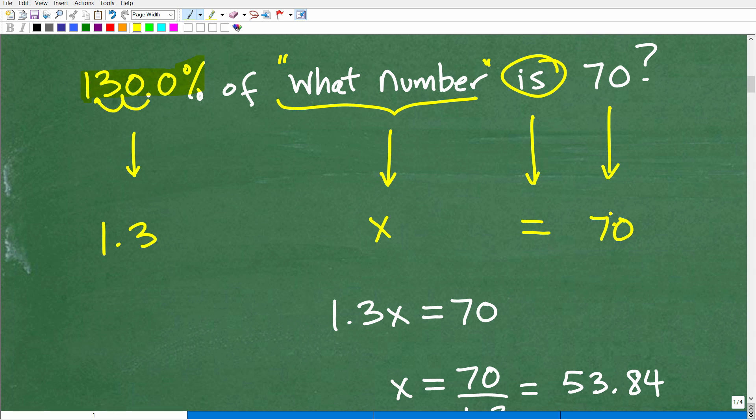So how do we find a percent of a number again, right? So remember, if I was trying to find 27% of 100, you convert this to a decimal and that's 0.27. And you multiply by the number.